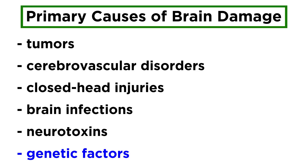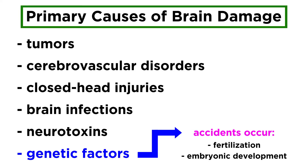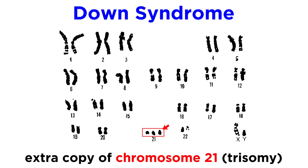Lastly, damage can be of a genetic origin. Certain recessive genes can be passed on that result in neurological or psychiatric disorders, and other disorders can occur simply due to accidents during fertilization or embryonic development. Down syndrome is an example of such a disorder, where an extra copy of chromosome 21 is produced in the egg, which causes a variety of complications.